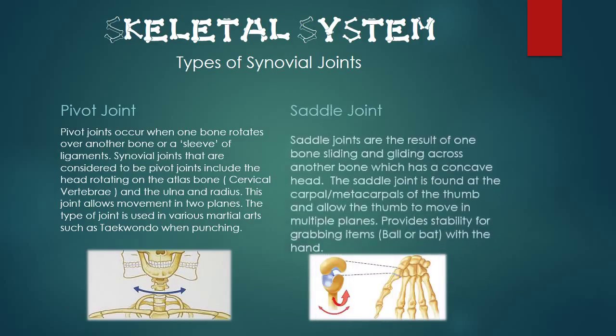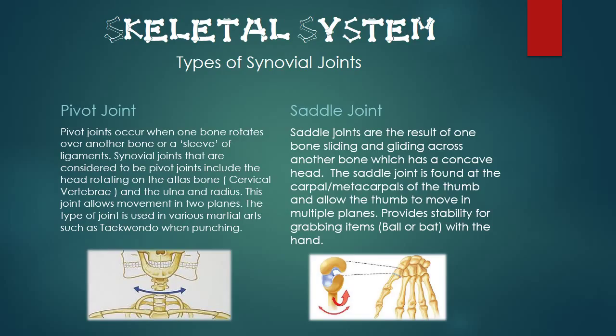Next is the saddle joint. Saddle joints are the result of one bone sliding and gliding across another bone which has a concave head. The saddle joint is found between the carpals and metacarpals of the thumb and allows the thumb to move in multiple planes. It provides stability for grabbing items with the hand.